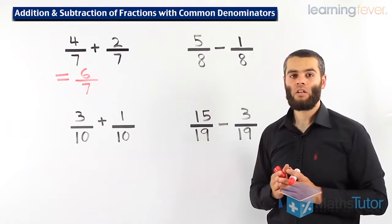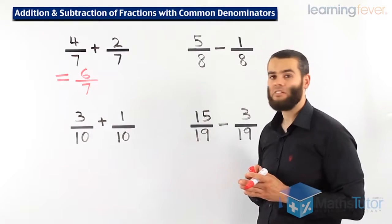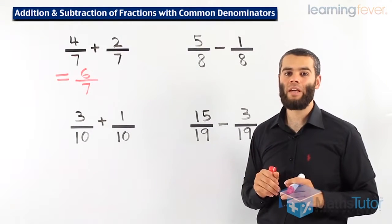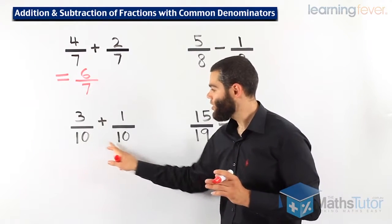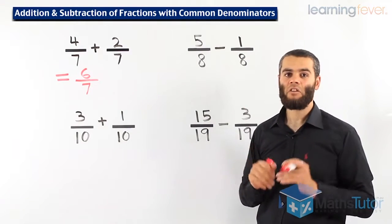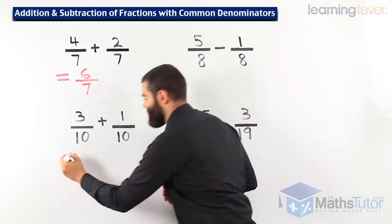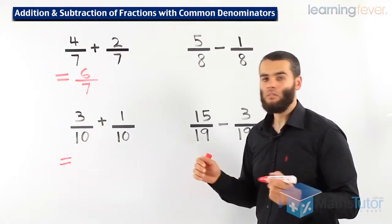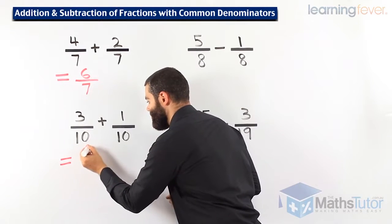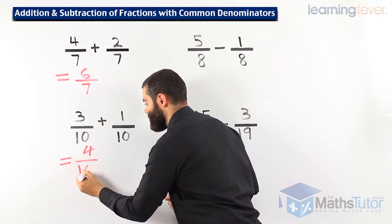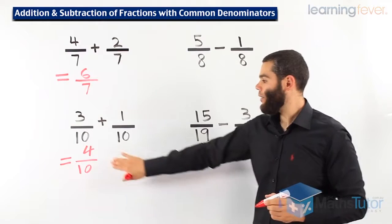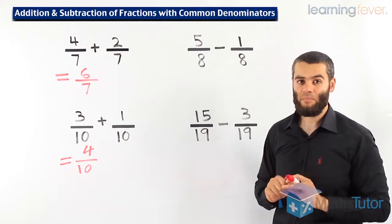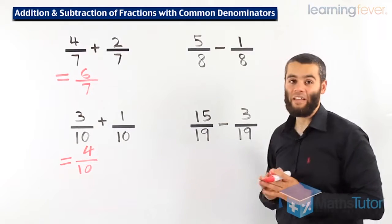Looking at this example, 3 over 10 plus 1 over 10. Do we have common denominators? Well, yes we do. 10 and 10 are the denominators. It's a common denominator. Let's start adding 3 plus 1, 4 over 10. So our answer here is 4 over 10. Hang on. Can we simplify? Well, we can tell that yes we can.